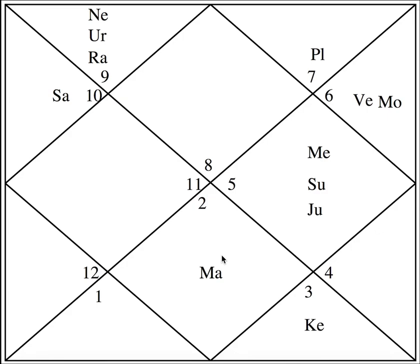Now we have to see where the moon is placed — where is his mind? Moon is placed in the sign of Virgo in the eleventh house. Count: one, two, three, four, five, six, seven, eight, nine, ten, eleven. Number six is the sign number — these numbers are not houses, they are zodiac sign numbers. So this is the eleventh house where moon is sitting, in the sign of Virgo. Venus and moon are sitting together here.